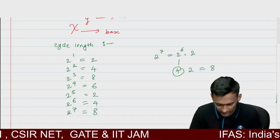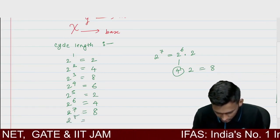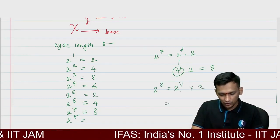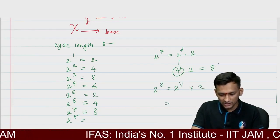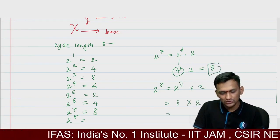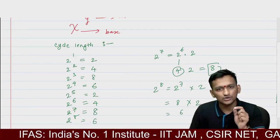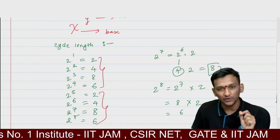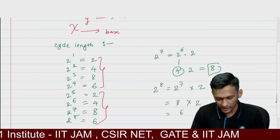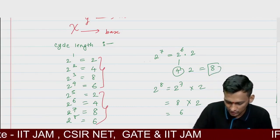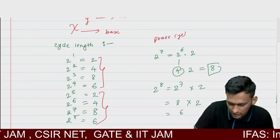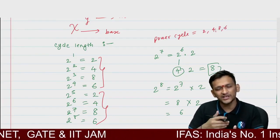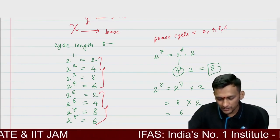2 raised to 8: 2 raised to 7 had last digit 8, multiplied by 2 gives 16 — last digit 6. You will find a beautiful pattern: 2, 4, 8, 6, 2, 4, 8, 6 — this keeps repeating. This is called the power cycle, and we call it a cycle because it repeats.